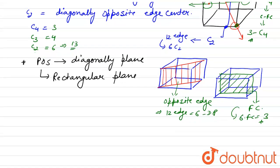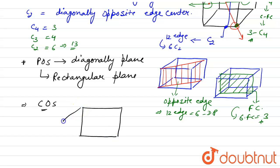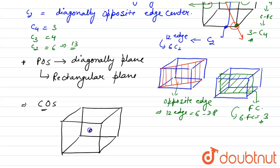Now there is one center of symmetry. The center of symmetry is the point in the cube like the body center — in either direction you move, you will find the same atom at an equal distance. This is the center of symmetry, and there is only 1.